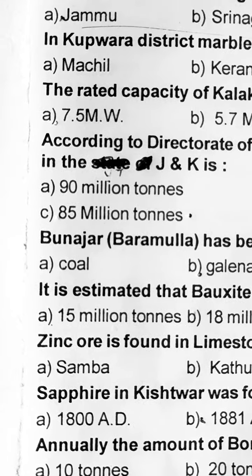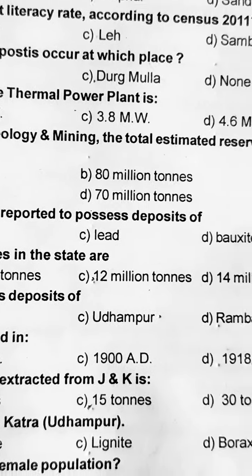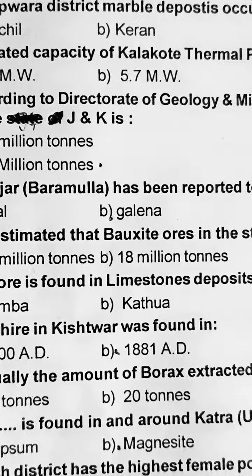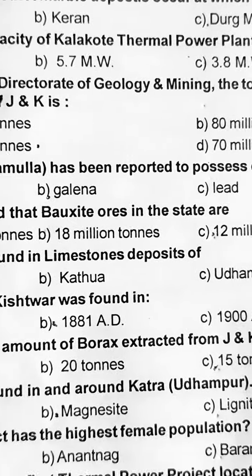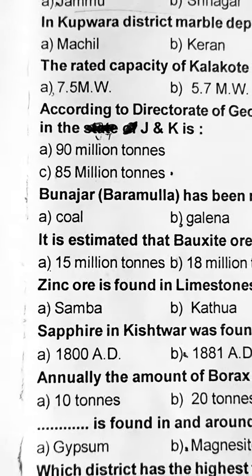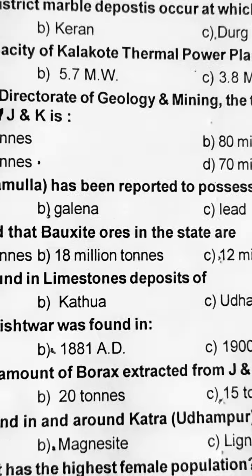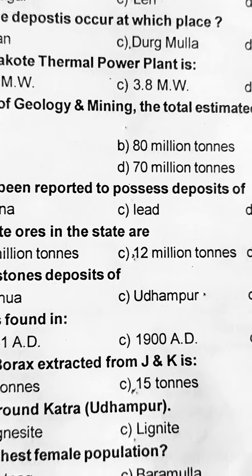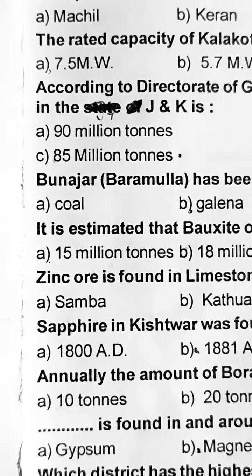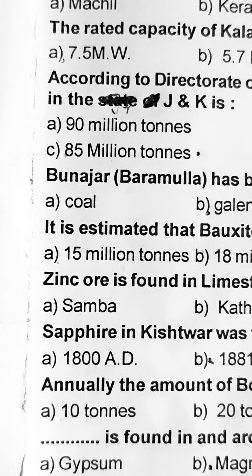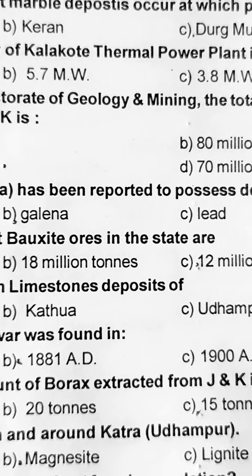Baramulla has been reported to possess deposits of — yeh Galena hai, B part iska sahi option hai. Wahan pe Galena ki deposits paai jate hain. Next question: it is estimated that bauxite ores in the state are 12 million tons.